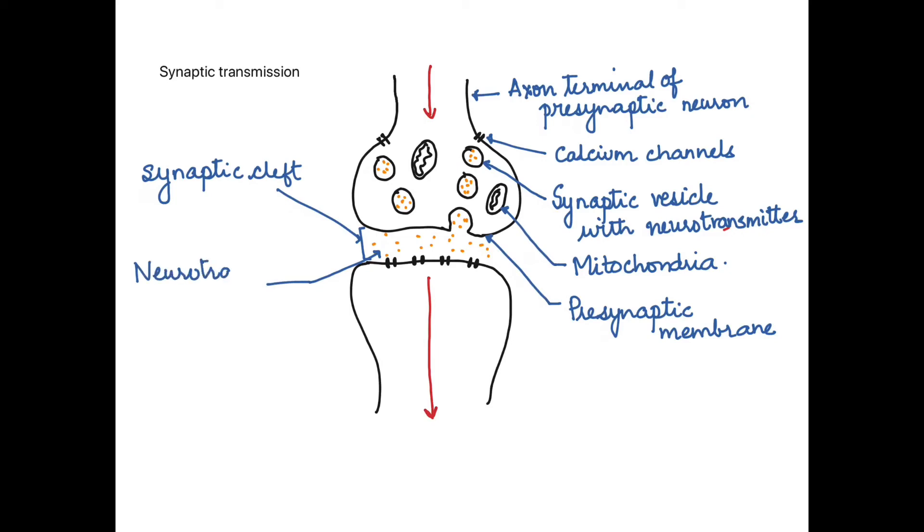So here we can see the gap is the synaptic cleft and in that the dots that can be seen here are the neurotransmitters. Now on the postsynaptic membrane are present the sodium channels. These sodium channels are ligand-gated, that means they have a receptor binding part on which the neurotransmitters bind.